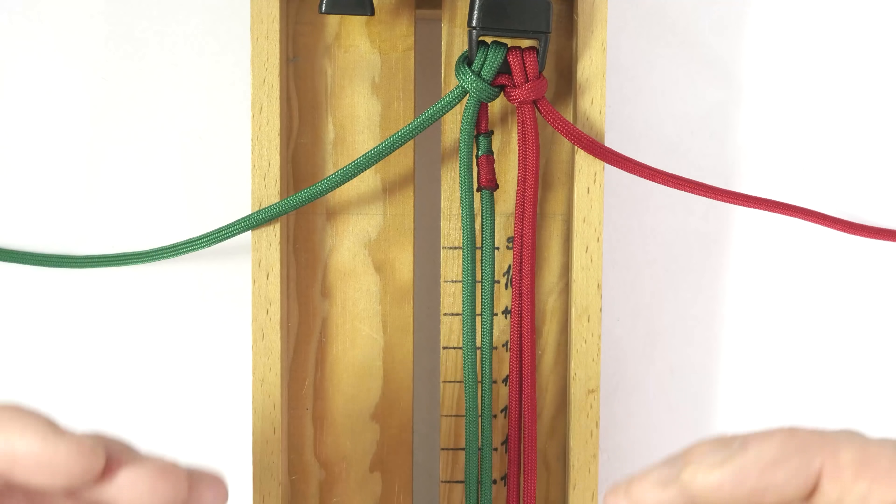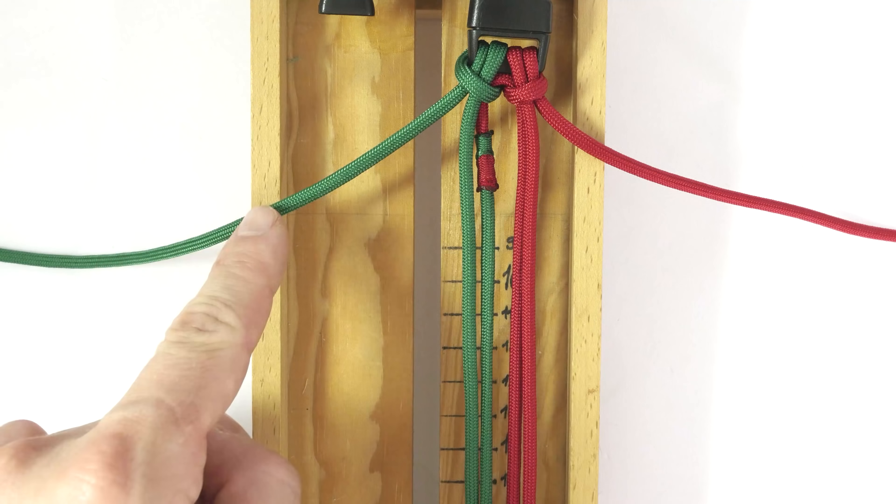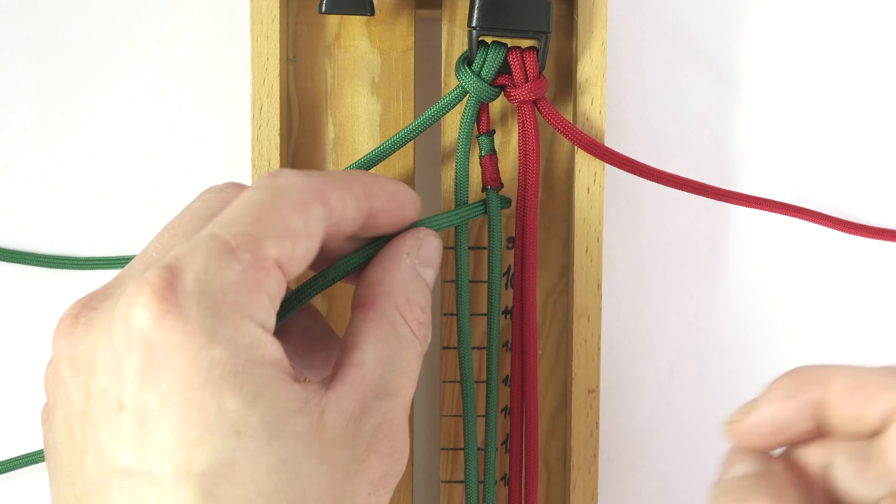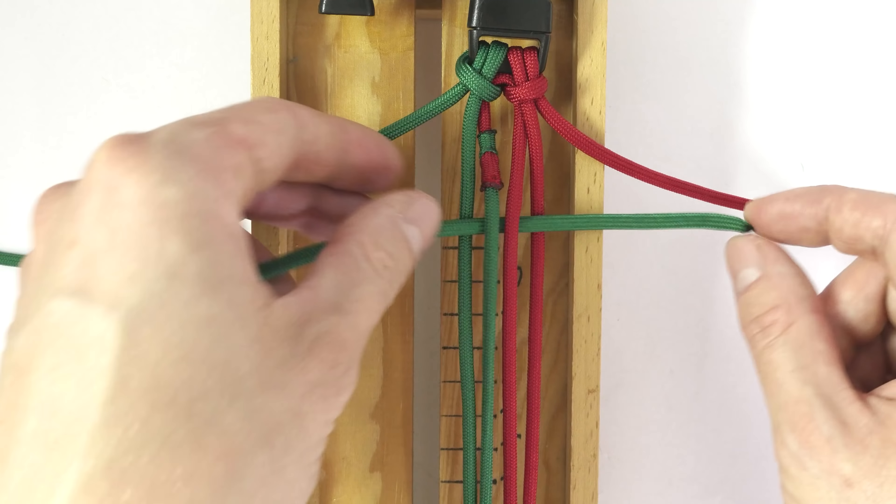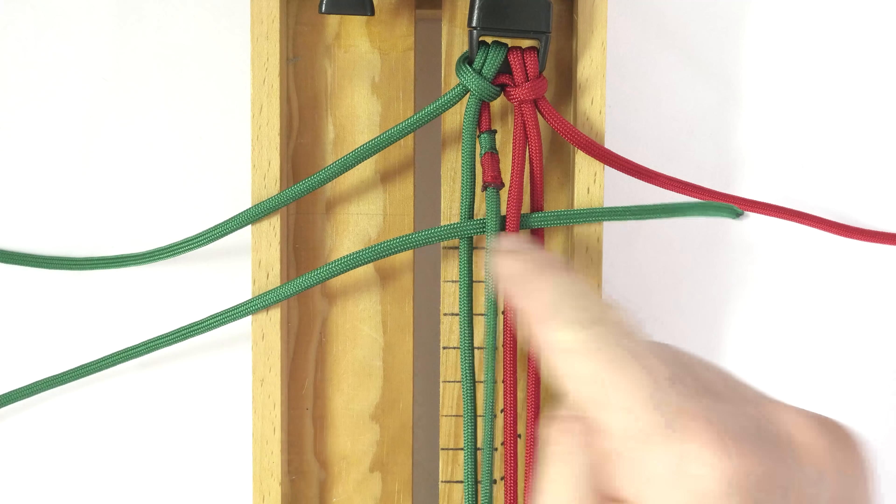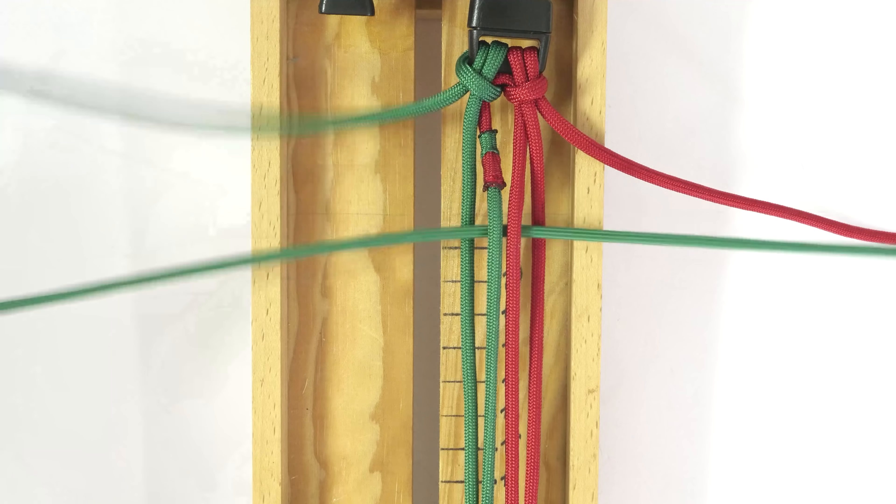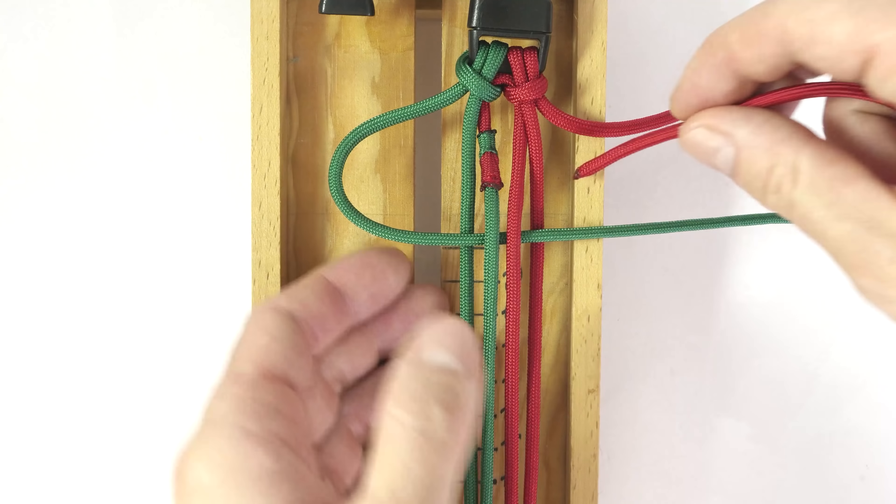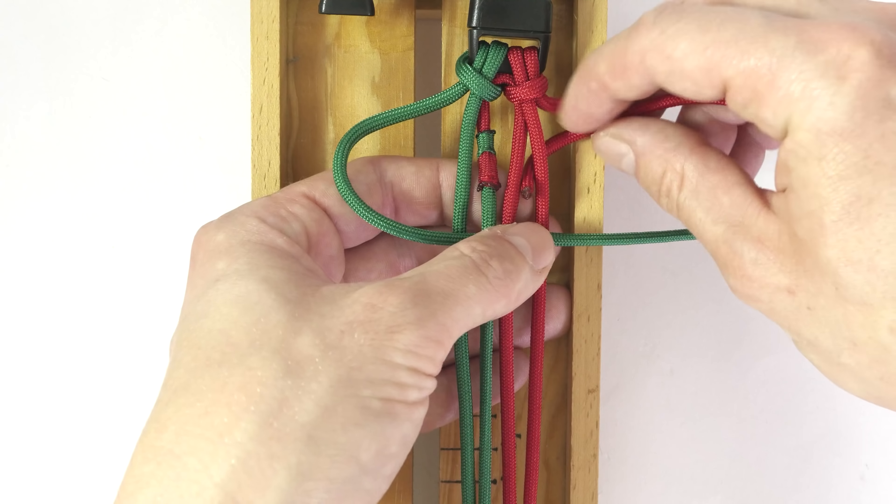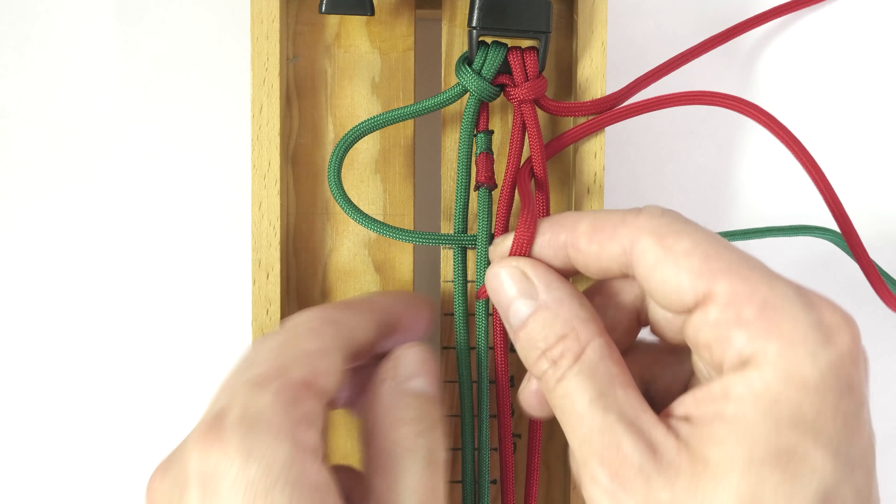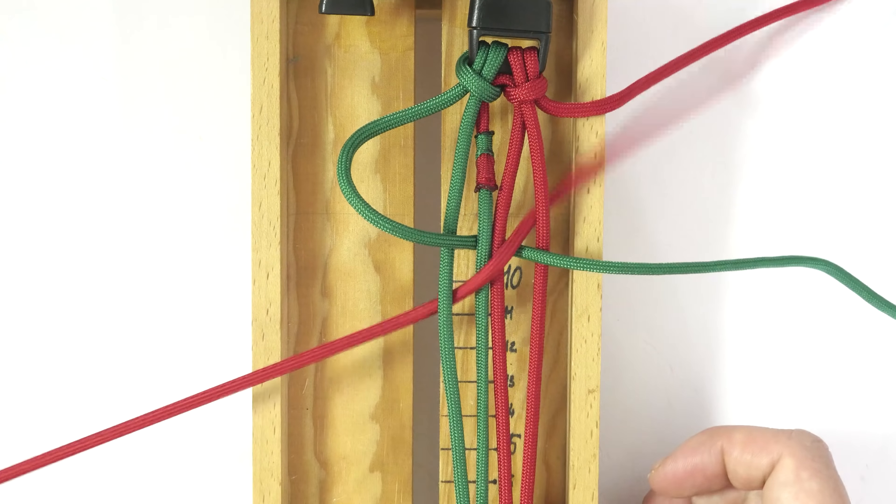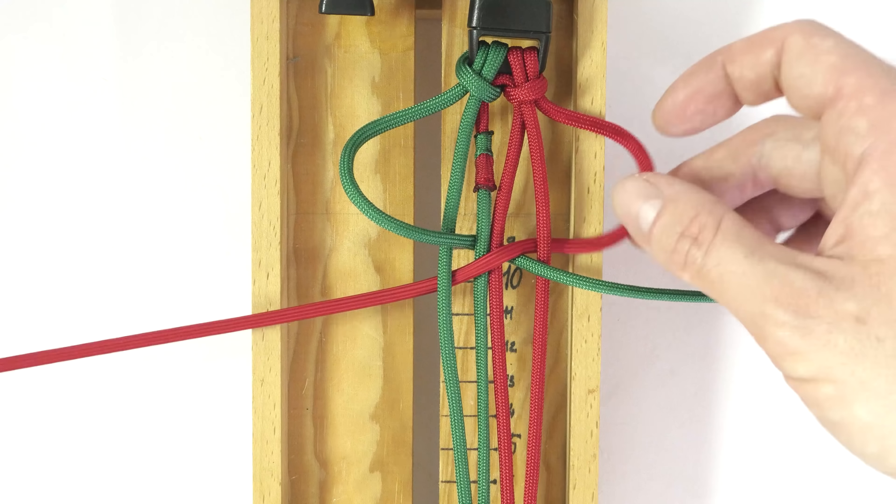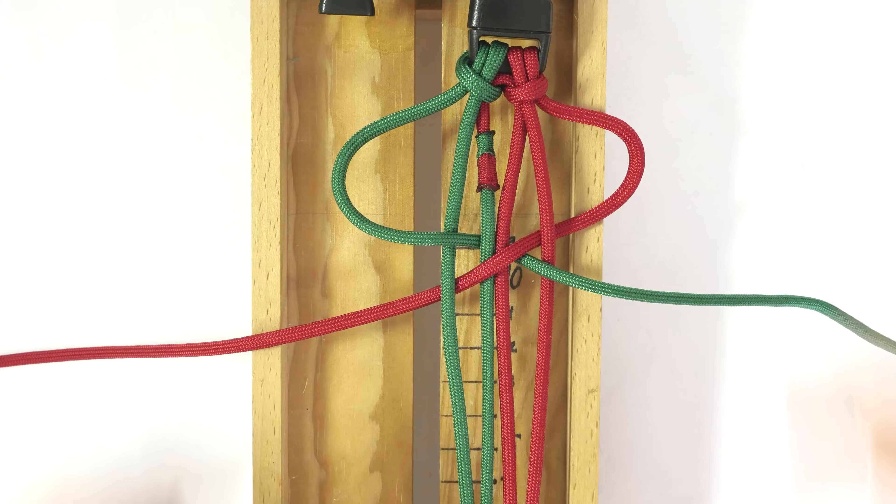We can now begin our weaving. Take the left end, pass over one, under two, and over one, going through the middle strands. Like this. Take the right end and pass under one, over two, and under one. Like this, tighten up.